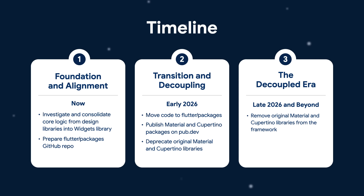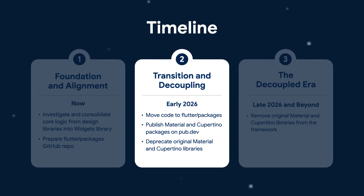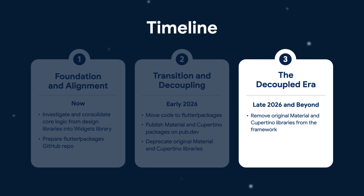We're going to be executing the decoupling design project plan over three key phases. Right now, as of December 2025, we're in phase one — working to ensure Flutter has a solid foundation for decoupling. This means we're moving common and core logic that currently lives in the Material and Cupertino libraries into the widgets library, and setting up the Flutter packages repo with all of the necessary infrastructure to support Material and Cupertino. Phase two will kick off in 2026, when the actual decoupling will happen — putting the new Material and Cupertino code in the Flutter packages repo and publishing the libraries on pub, then deprecating the old libraries in the main Flutter repo. Finally, with phase three in late 2026, we'll remove the original deprecated Material and Cupertino libraries from the framework and fully take advantage of the new decoupled architecture.